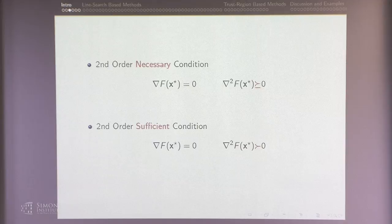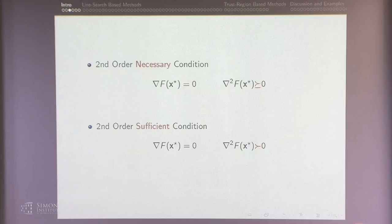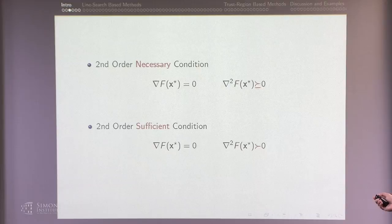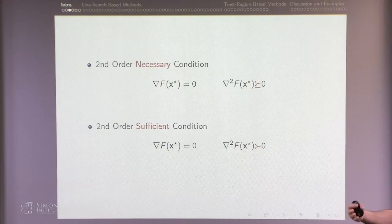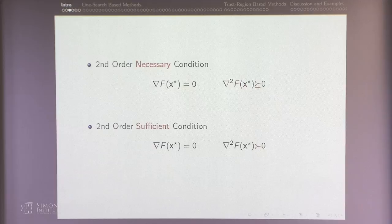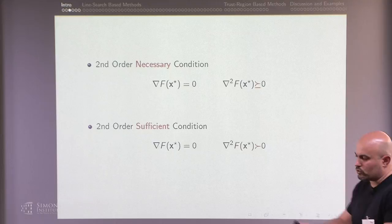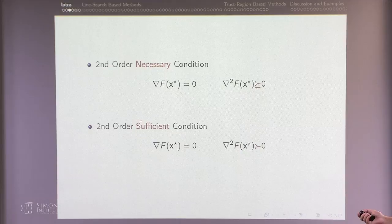If you have a point where the gradient is zero, you haven't said much in the non-convex setting. You need a little bit more — what's known as the second-order condition — where you want your Hessian to be positive semi-definite. This is a necessary condition: if you are at a local minimum, you necessarily have these conditions, meaning your Hessian is positive semi-definite — there is no direction of descent, there are flat regions, but no direction pointing downwards. The sufficient condition is that the Hessian is positive definite, meaning every direction is actually pointing up, with no flat direction.